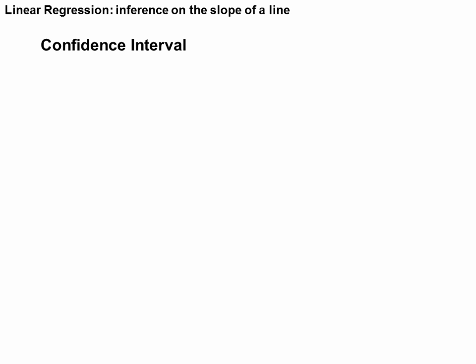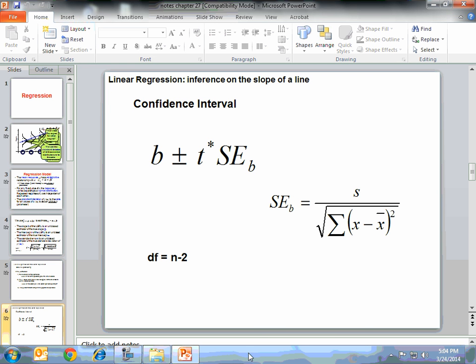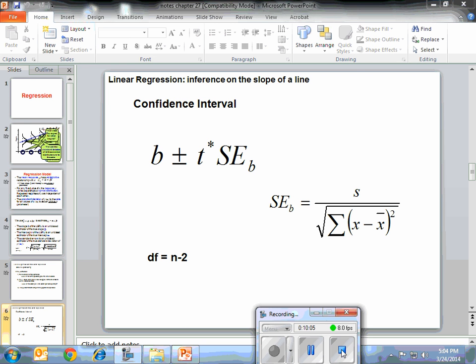Let's look at the t-intervals. Our t-interval formula is b plus or minus t-star times SE sub b. Our time is running short on this video, so I'm going to pause here and come back in the next one.